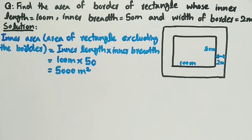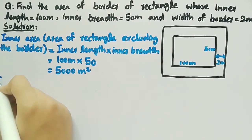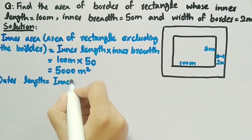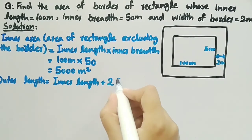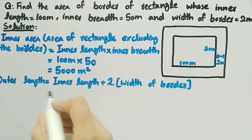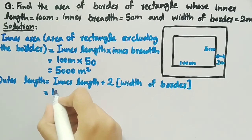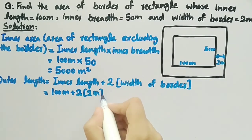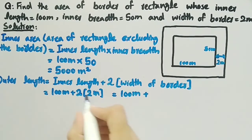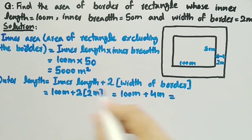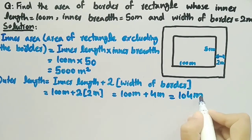Now we have to find the outer area, that is, the area of the rectangle including the border. For this, we need the outer length and outer breadth, which are not given. Outer length is equal to inner length plus two times the width of border. Width of border is 2 meter, so outer length equals 100 plus 2 times 2, which is 104 meter.